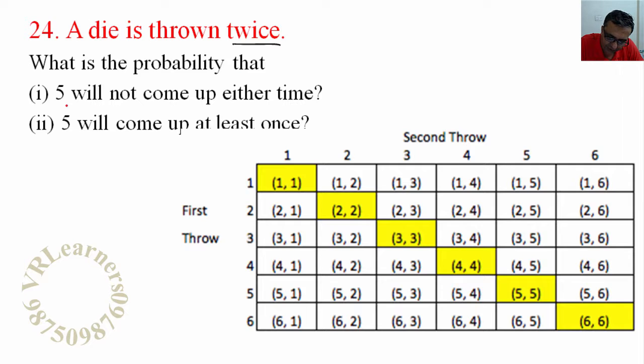What is the probability that 5 will not come either time? And the second part asks: What is the probability that 5 will come at least once?